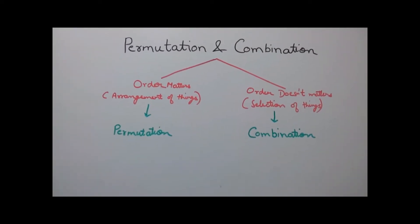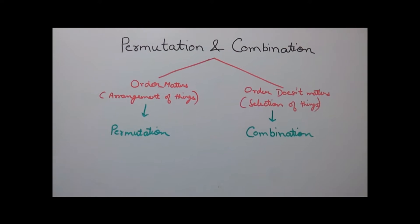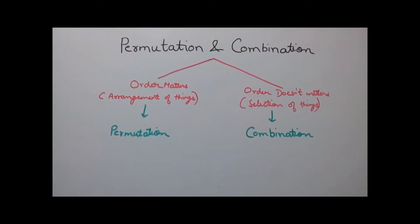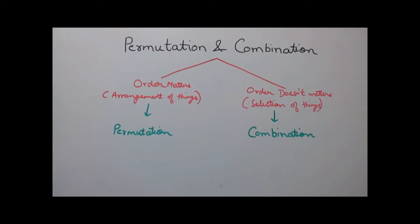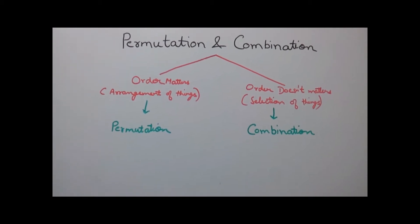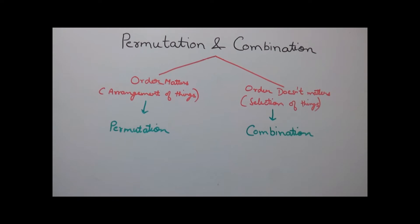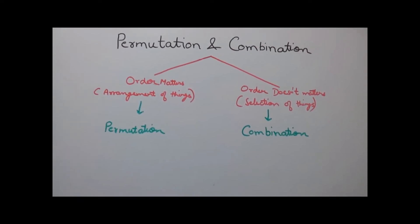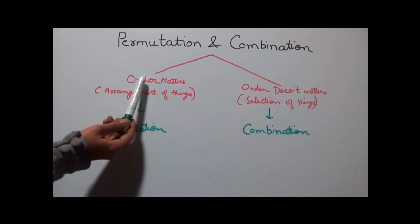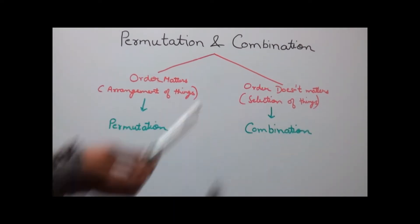Hello, welcome to NGIGU tutorials. We have just completed our series on probability. Today we are starting a new concept which is permutation and combination. Permutation and combination is divided into two parts: where order matters, and secondly, where order does not matter.